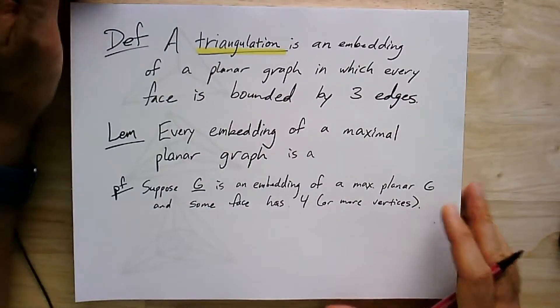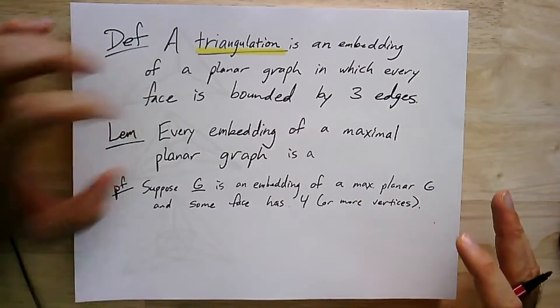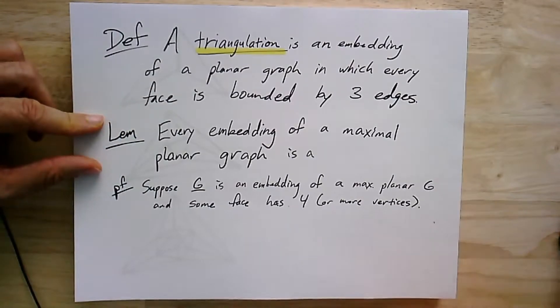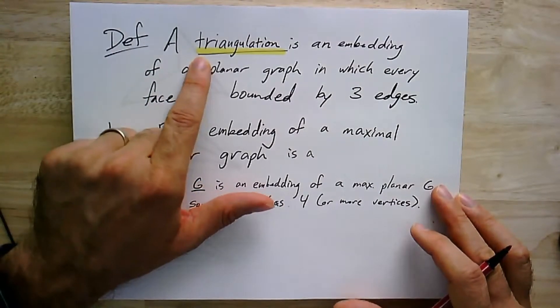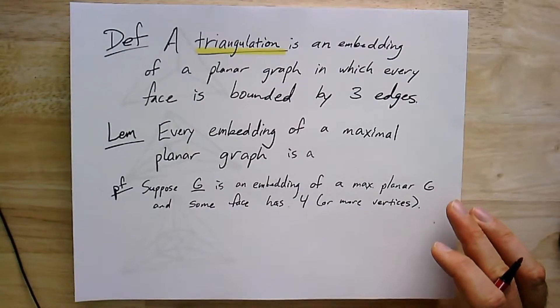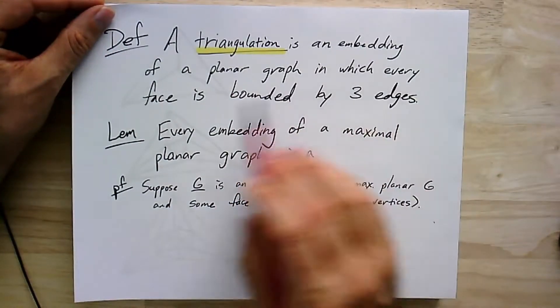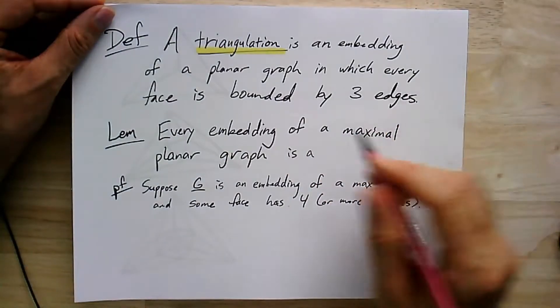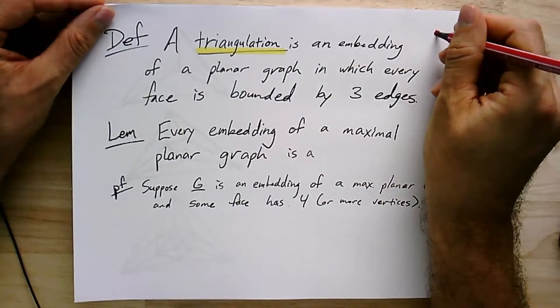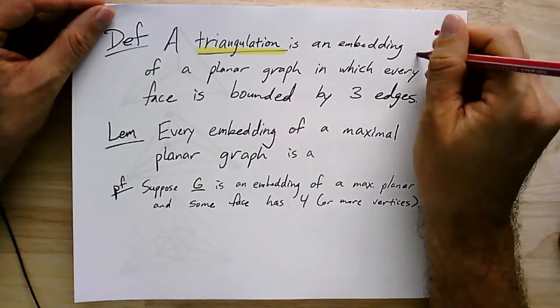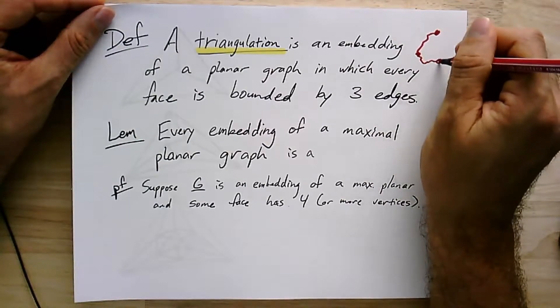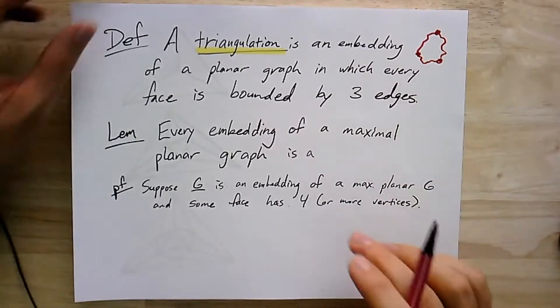I'm going to use this other word, which is going to be mostly equivalent. The lemma is going to seem like it's equivalent, but it's a different kind of thing. So here it is, but let's be careful with it, a triangulation. It's going to be an embedding of a planar graph in which every face is bounded by three edges. So every face looks like a triangle. That means there's three vertices and three paths like this.